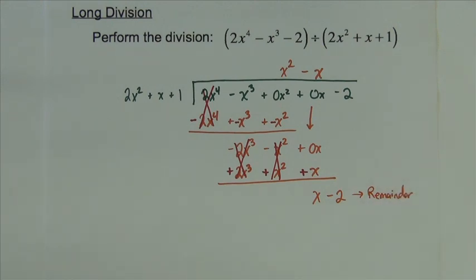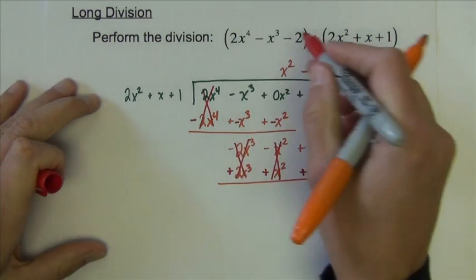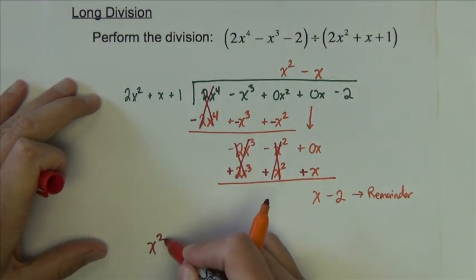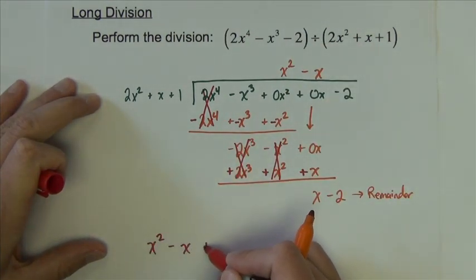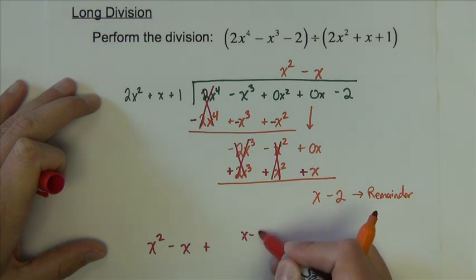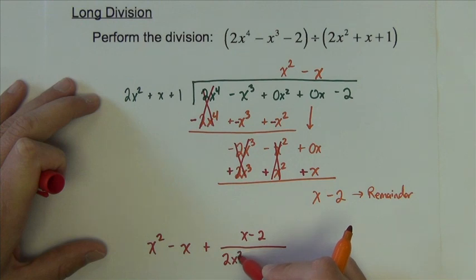So to write out my final solution, it is x squared minus x plus the remainder, x minus 2, over the divisor, 2x squared plus x plus 1.